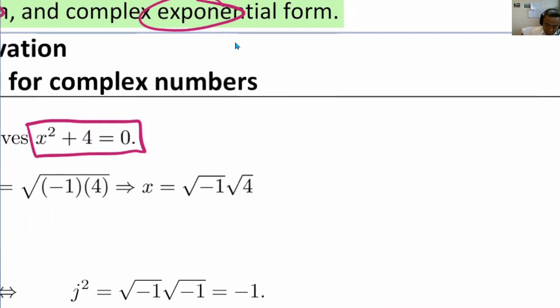We have x squared minus 4 equals 0. So what we are trying to do is we are trying to find a value of x such that this equation on the left-hand side is also equal to 0. What can we do?